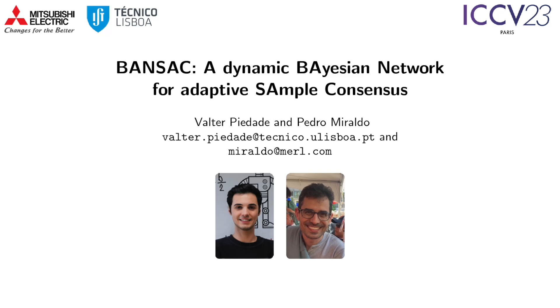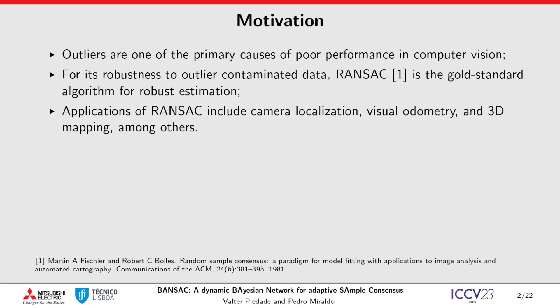BANSAC, a dynamic Bayesian network for sample consensus. Outliers are one of the primary causes of poor performance in computer vision. Because of its robustness to outlier contaminated data, RANSAC is the standard algorithm for robust estimation.